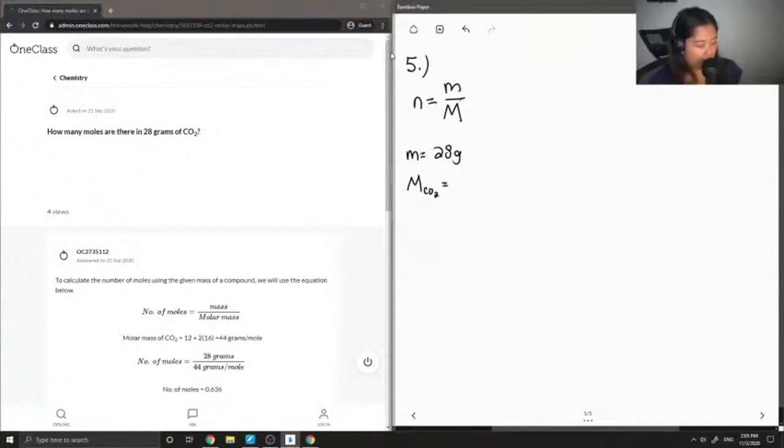The molar mass of CO2 is going to be equal to the molar mass of carbon plus the molar mass of oxygen times two. These are values that you would find on your periodic table. The molar mass of carbon is 12.01 grams per mole.